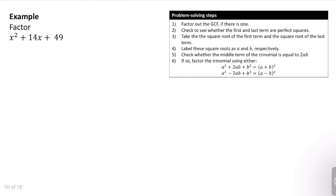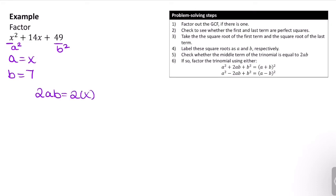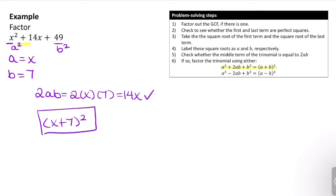Let's try x² + 14x + 49. Notice that x² is a perfect square and 49 is a perfect square, so a equals x (the square root of x²) and b equals 7 (the square root of 49). We check: 2ab = 2 times x times 7 = 14x, which matches our middle term. Since we have a plus sign, we use (a + b)², so this factors as (x + 7)². You can expand it with FOIL to verify.